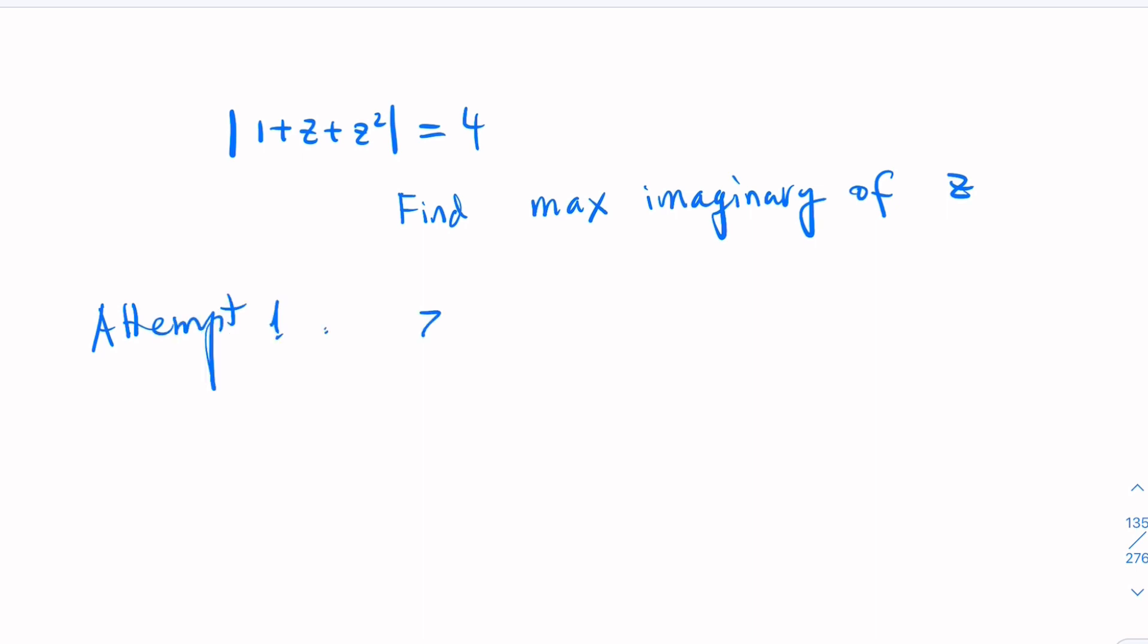Let z equal x plus yi, xy real numbers here, so the imaginary part would be y. The question is what is max of y? You plug in here, what you get is 1 plus z plus z squared would be 1 plus x plus yi.